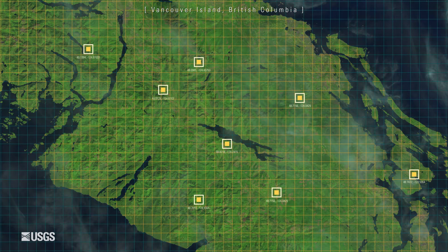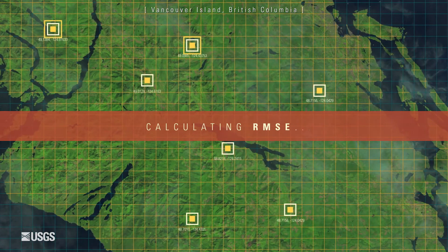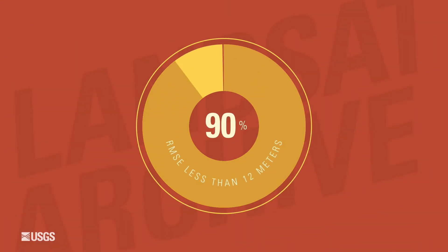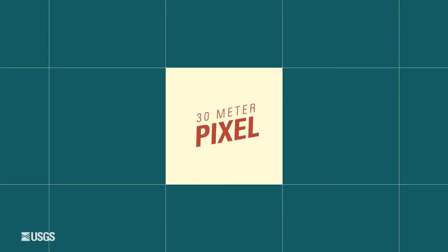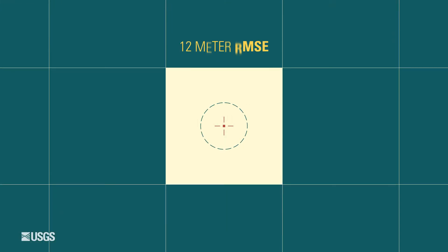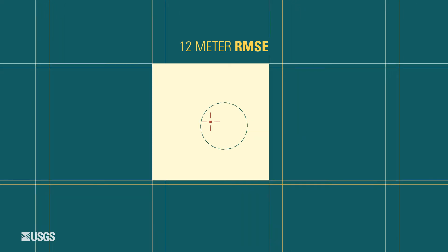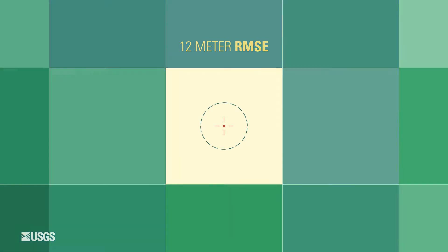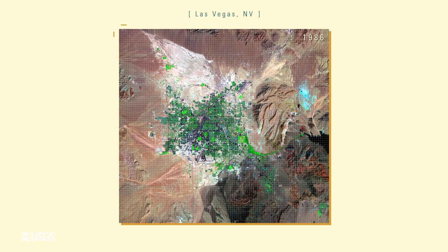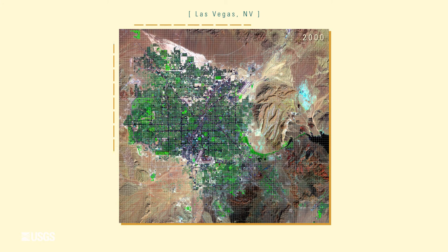After the image is shifted, an RMSE can be determined. Ninety percent of collection scenes are within a 12-meter RMSE goal. The pixel we're working with is a 30-meter pixel, so when we say RMSE, we're comparing that image to those points on the ground to ensure the image actually aligns to that 12-meter specification. That way, when you're doing land change monitoring and stacking scenes over time, you know that each pixel isn't going to shift more than 12 meters either way.